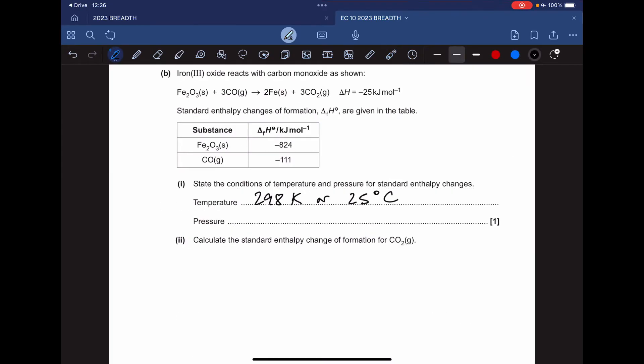Moving on to part B. The standard temperature is 298 Kelvin or 25 degrees Celsius, and standard pressure is either 100 kilopascals, 101 kilopascals, or 1 atmosphere.